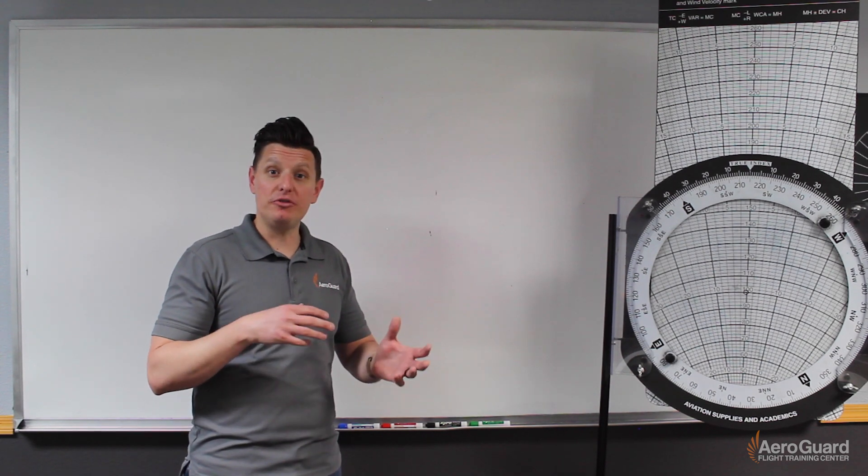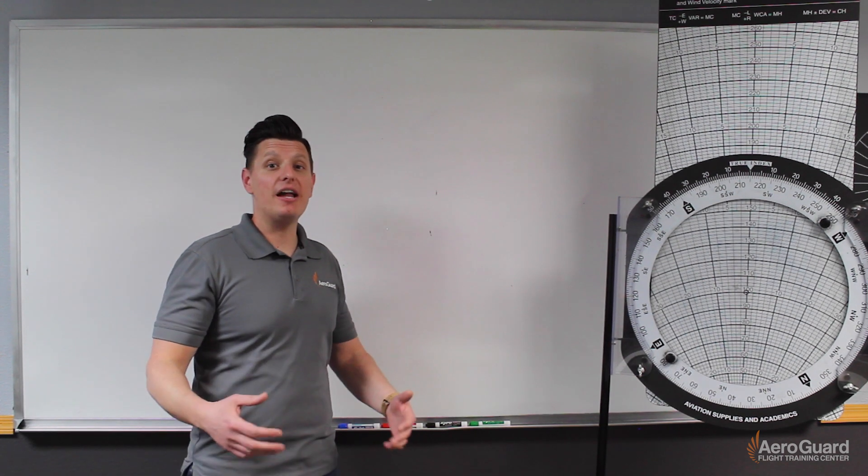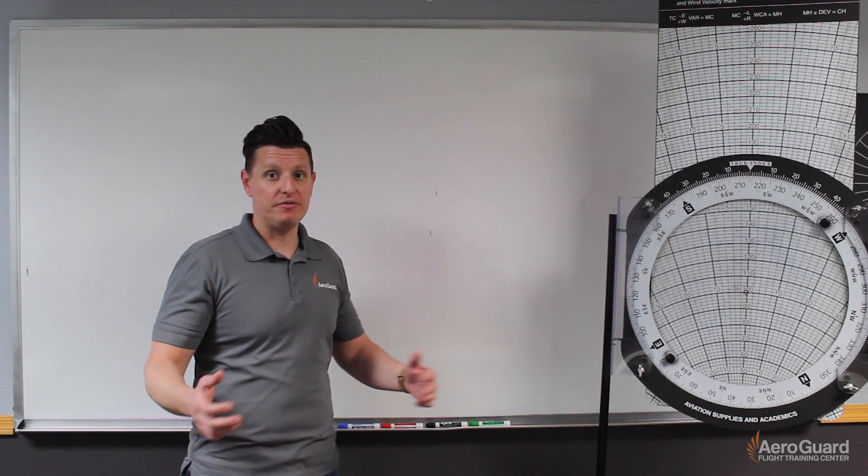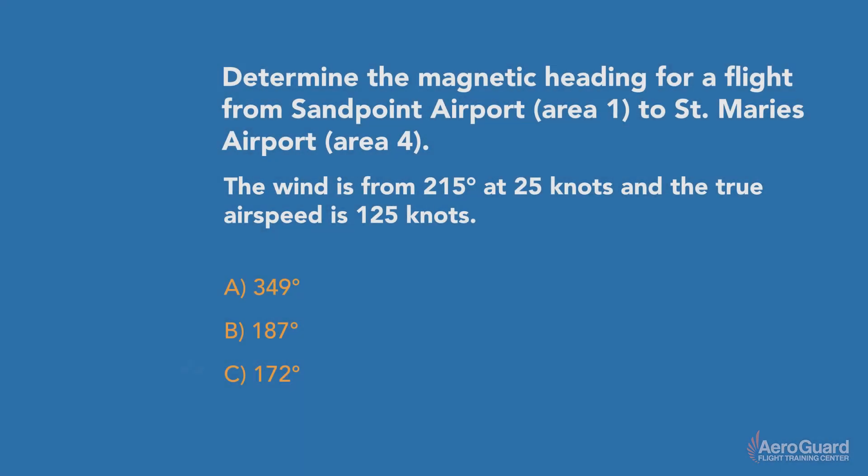This comes from a question specific in the FAA knowledge test bank, and we're going to use that example to help us figure out how to use this E6B. The question says: determine the magnetic heading for a flight from Sandpoint Airport in Area 1 to St. Marie's Airport in Area 4. The wind is from 215 degrees at 25 knots, and the true airspeed is 125 knots.